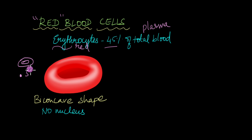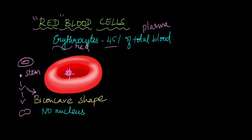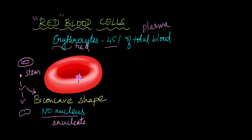While red blood cells are being formed from a progenitor cell, like a stem cell, in the process of maturation the nucleus is ejected out of the cell. So the mature red blood cell — the mature erythrocyte — does not have any nucleus. It is known as anucleate. This is important because it increases the space inside the cell for oxygen to be transported throughout the body.